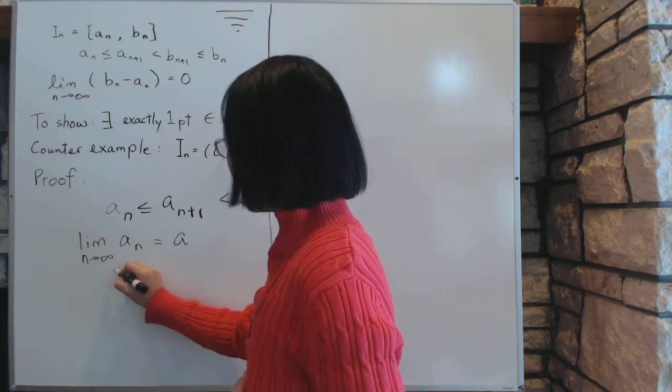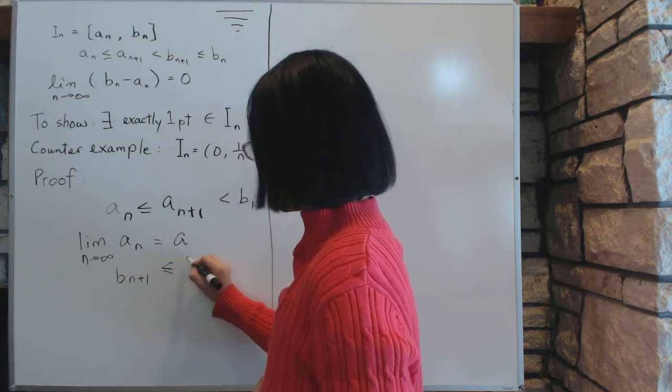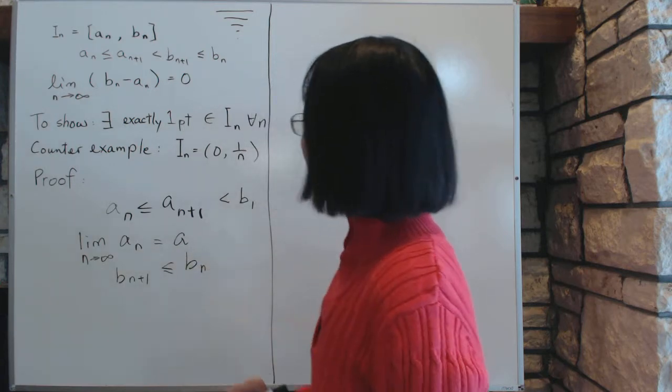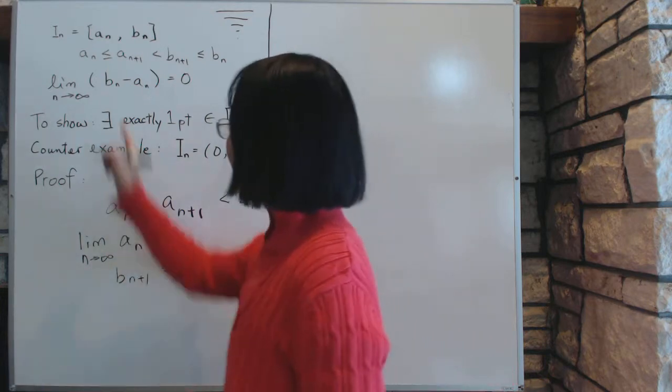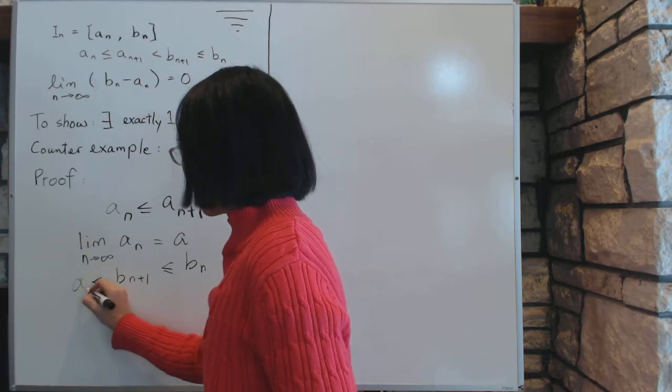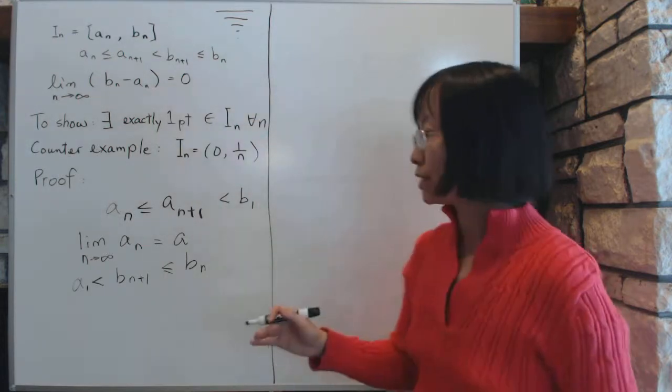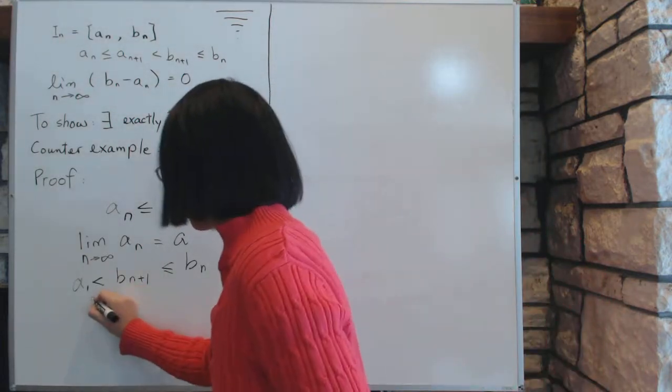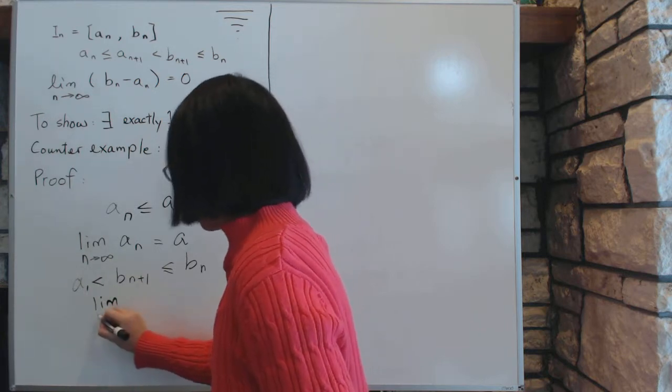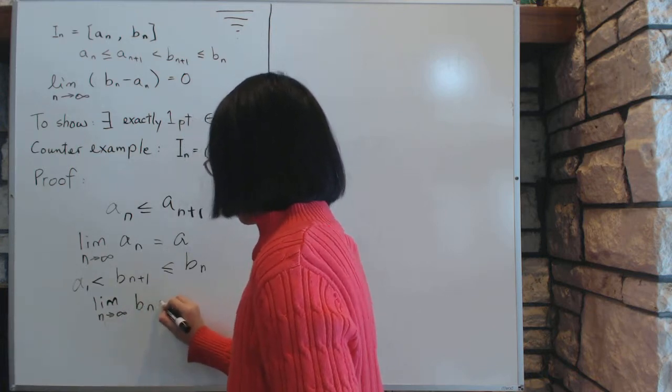Now, similarly, we can argue that b, the b_n is a decreasing sequence, b_{n+1} is less than or equal to b_n. And then it's decreasing, but it's also bounded on the bottom by the a on this side. So it's going to be bigger than a, such as a_1. So it's bounded on the bottom and it's decreasing, which means the limit also exists, so the limit of b_n exists by a similar argument, b_n, and we will call it b.